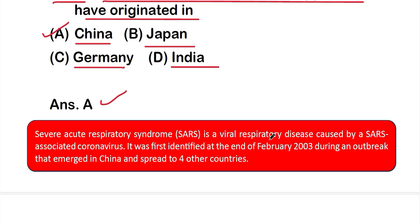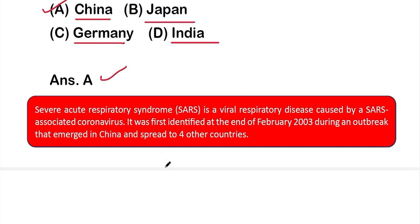Severe Acute Respiratory Syndrome (SARS) is a viral respiratory disease caused by the SARS-associated coronavirus. It was first identified at the end of February 2003 during an outbreak that emerged in China and spread to four other countries.